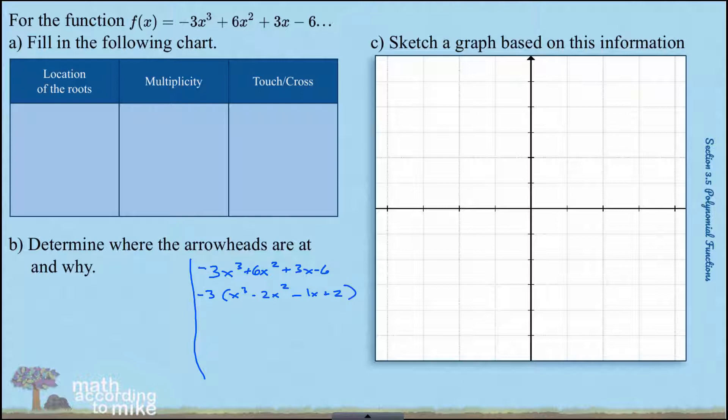Now we're going to do what's called factoring by grouping. So we group 2 by 2s. I'm going to put this in big brackets here. So we're going to group the first two and we're going to group the last two. Make sure in between there's a plus sign. Because the third term was negative 1x, I had to keep the negative with the x.